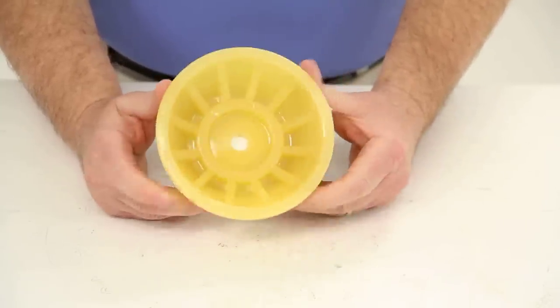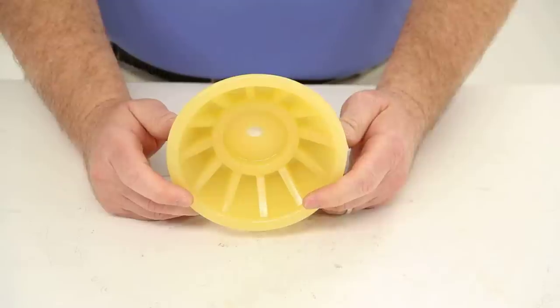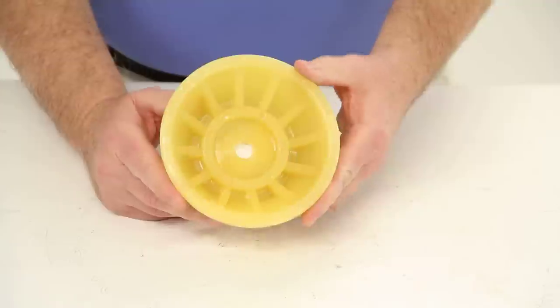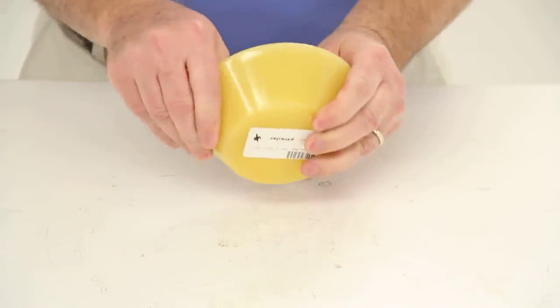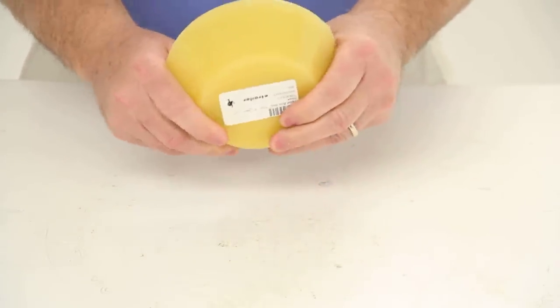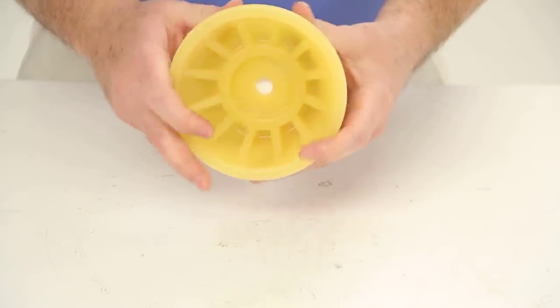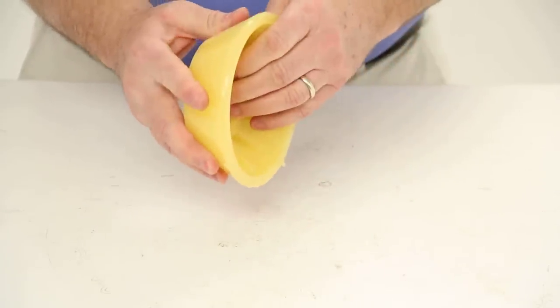This part is constructed of TPR material, which is a thermoplastic rubber material. It is a non-marking, non-scratching material. It is stronger and more durable than your traditional rubber roller, and it is softer and more pliant than polyurethane.